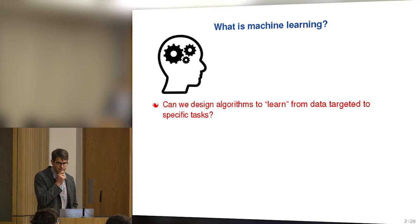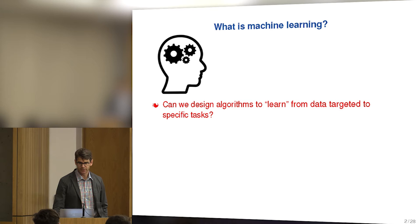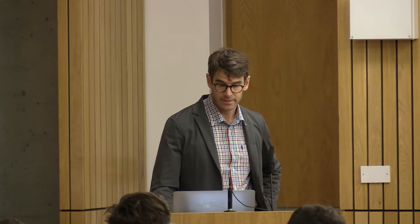This is really kind of a cartoon of machine learning. When I ask what is machine learning, I'll focus on the core of the discipline. Of course, machine learning is incredibly broad — anytime anyone's doing anything with data and data analysis, they can call it machine learning. It could be a statistical method or just some ad hoc method. But the core of machine learning, in my view, is trying to answer questions like: can we design algorithms to learn from data targeted to specific tasks?